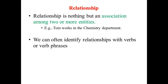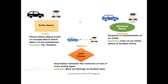Next is the relationship. If there are two or more entities, then they are going to be related — they communicate with each other. That is called a relationship. It is an association between two or more entities. For example, Tom works in the chemistry department. Tom is one kind of entity, and the chemistry department is another kind of entity. The activity 'working' puts down the relationship between Tom and the department. We can often identify this relationship in the form of verbs or verb phrases.